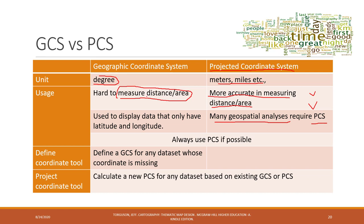We use GCS when displaying data that is based on latitude and longitude. For example, when you have GPS data, GPS devices in most cases will provide data points containing latitude and longitude. In that case, you can only display the data by using a GCS. But use PCS whenever possible, as PCS is always preferred.